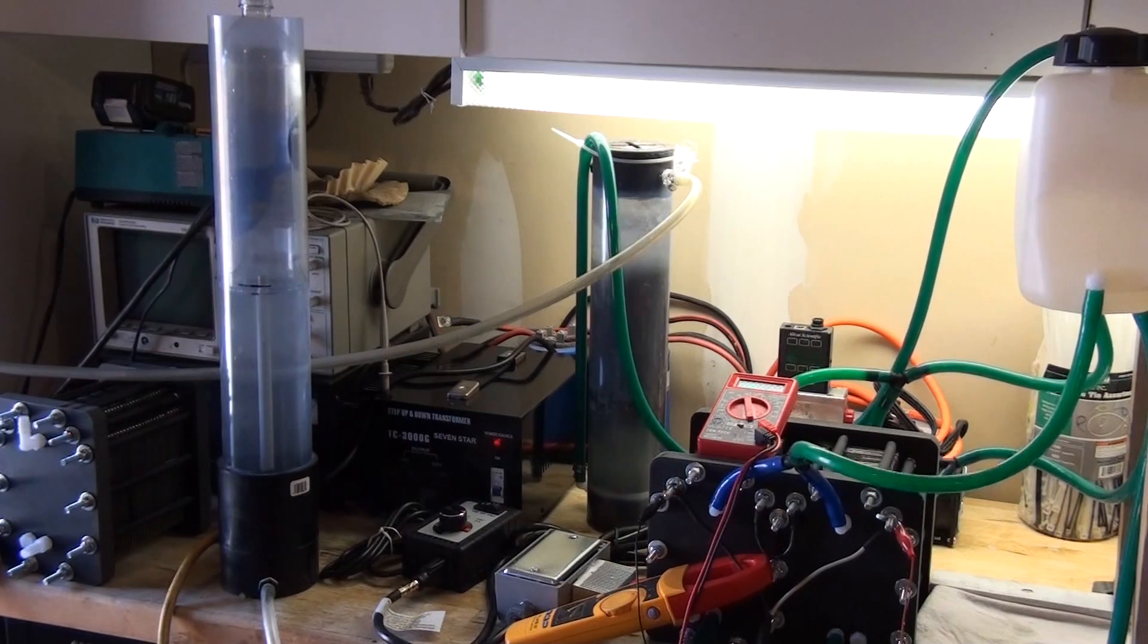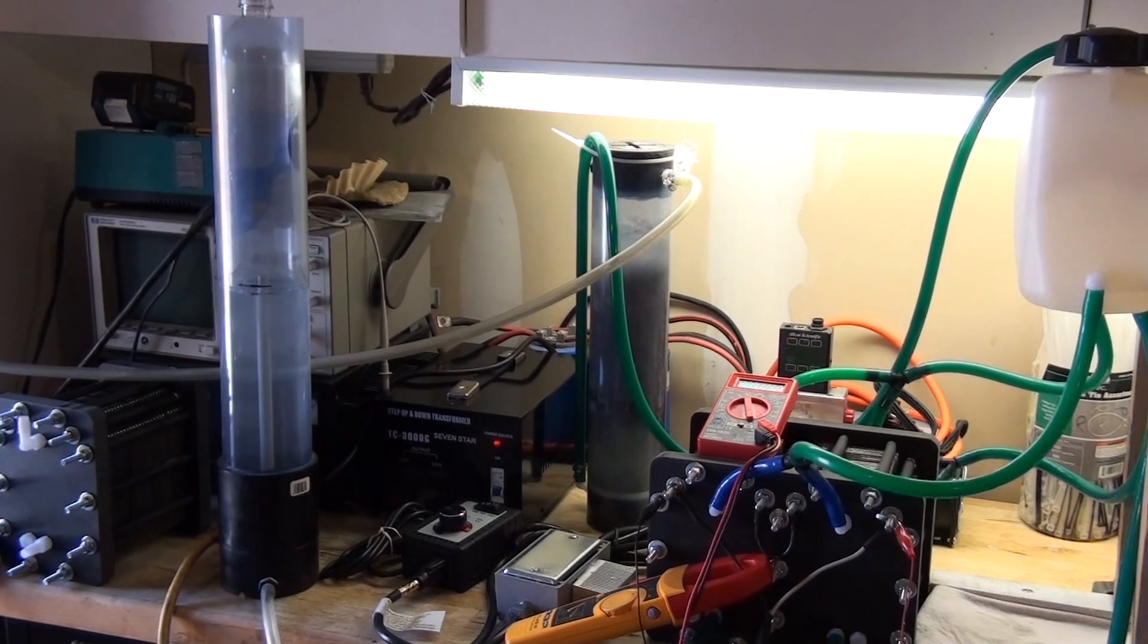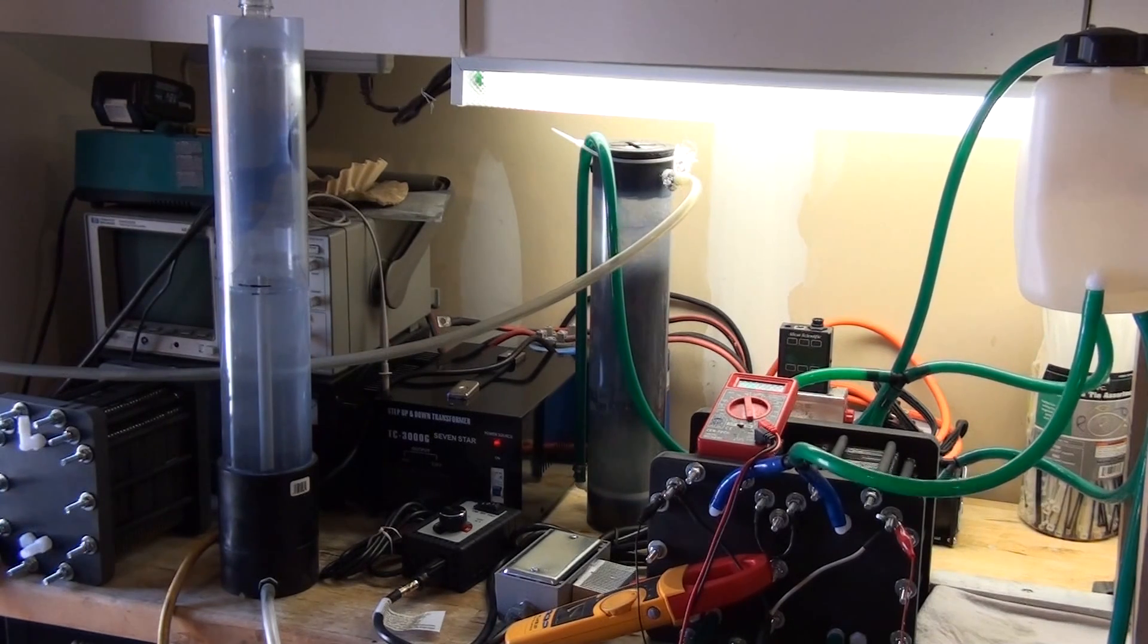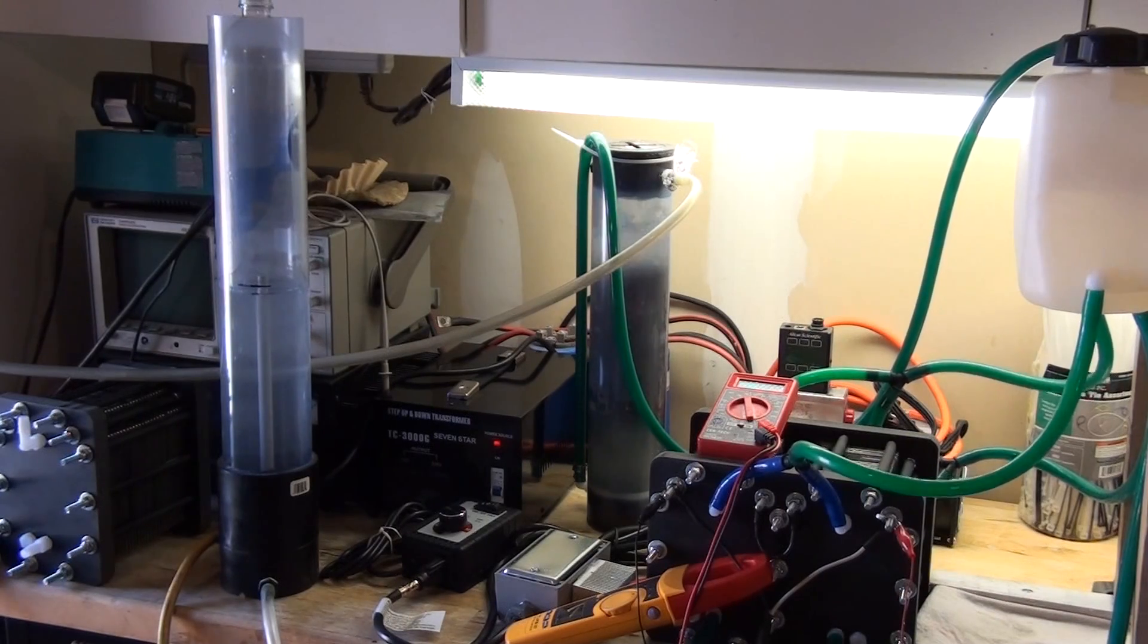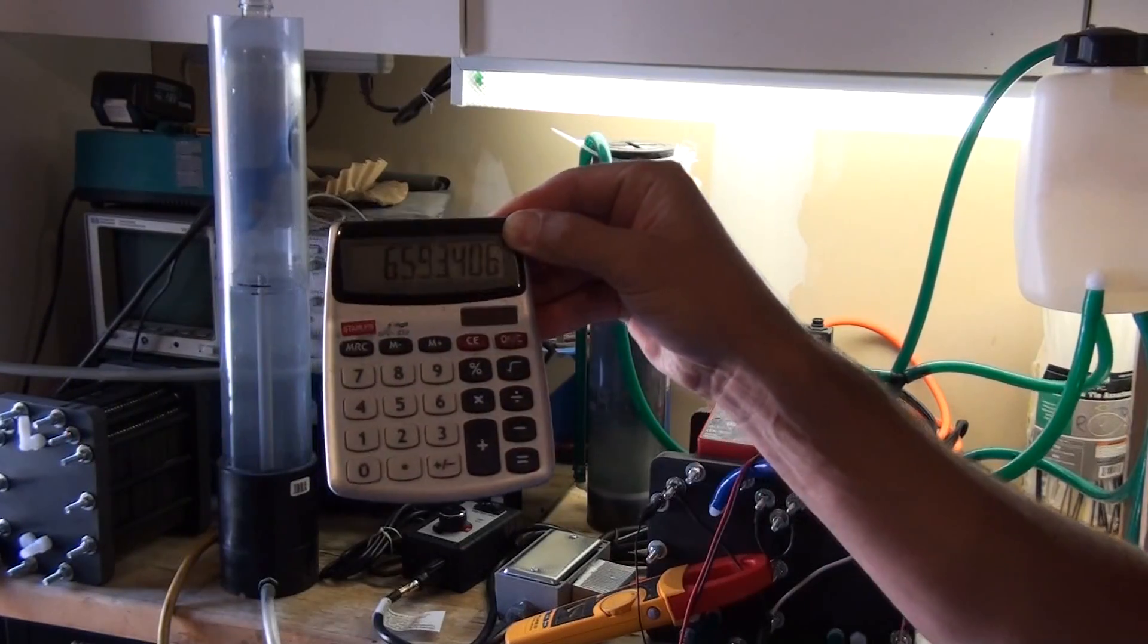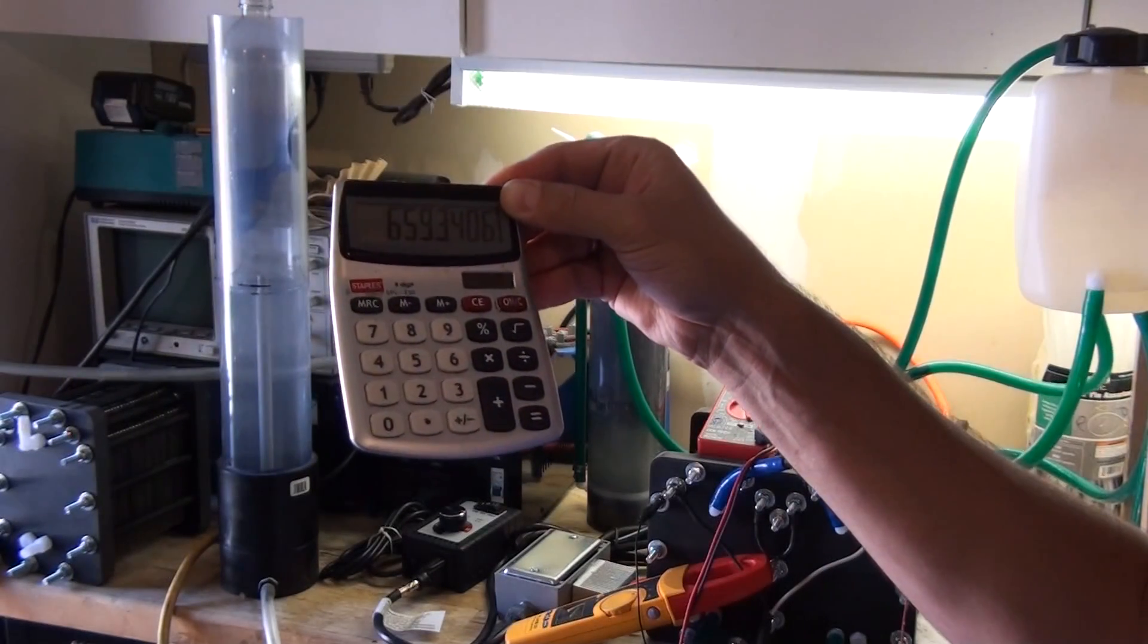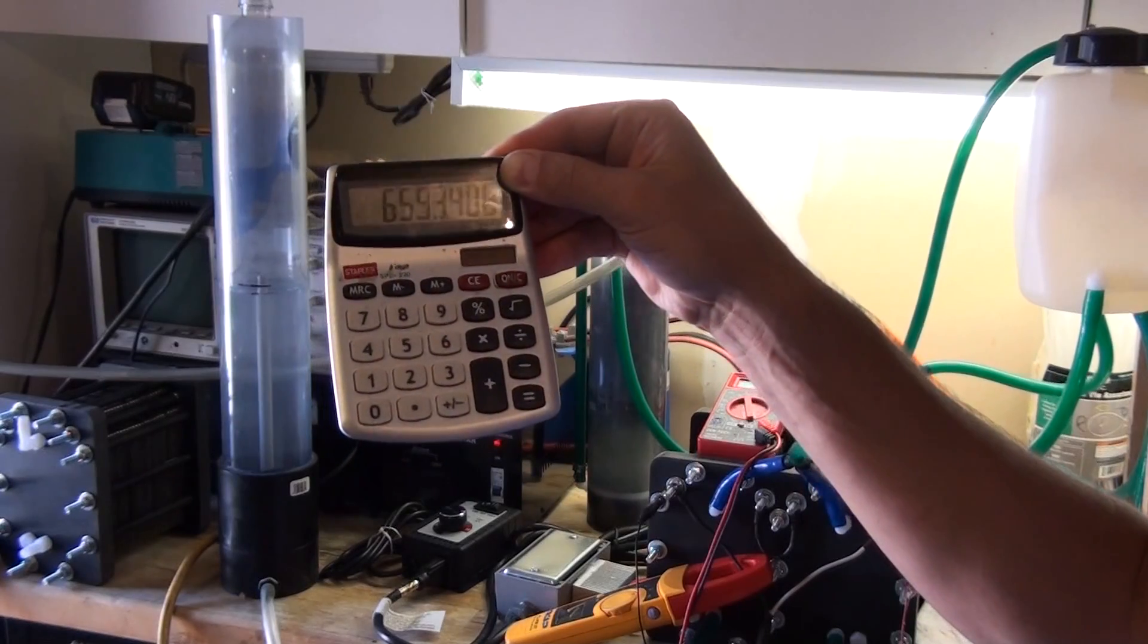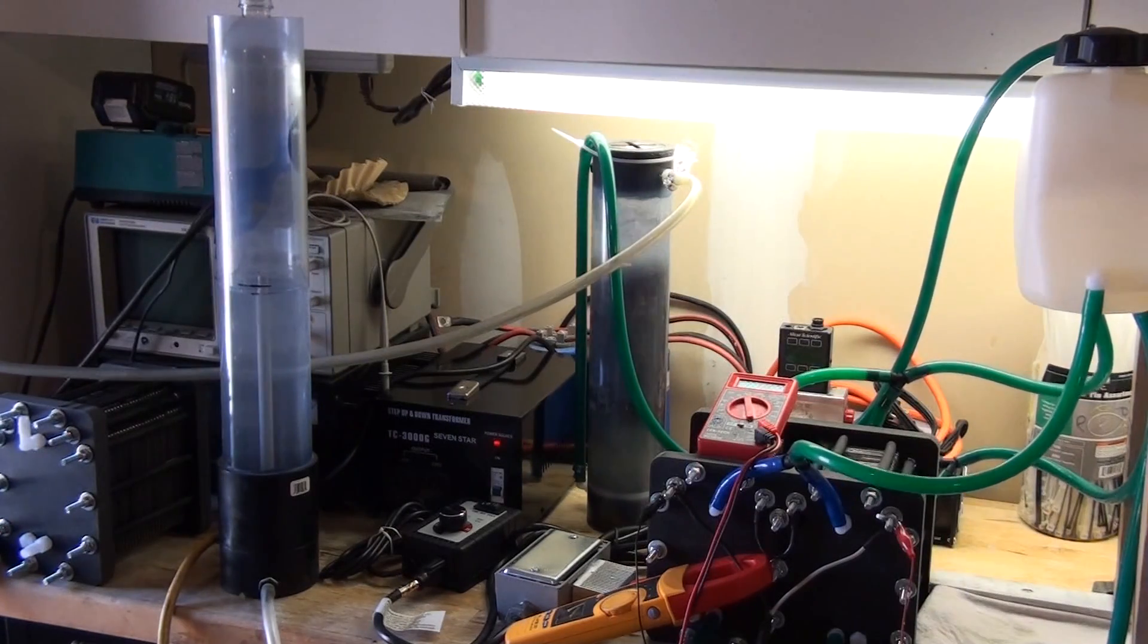1,000 milliliters divided by 9.1 seconds, times 60. We've got 6.593, so 6.6 liters per minute at 7 amps.